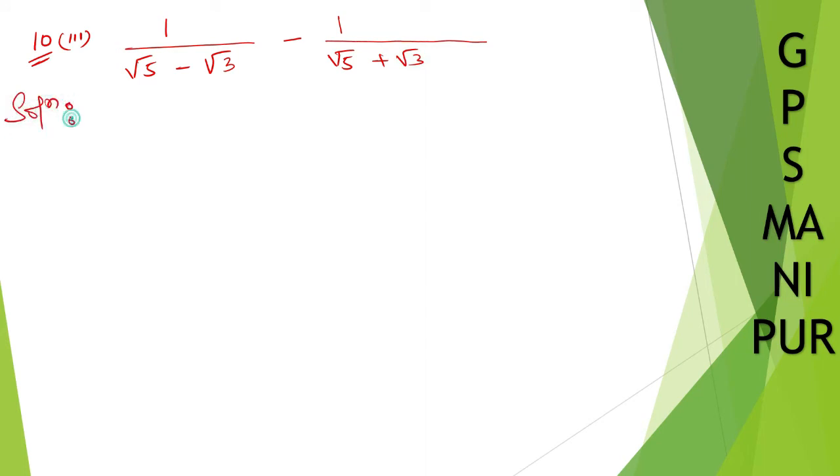Okay, solution. Now, how we can solve this? Like the previous type, same thing you are going to do. You can do like this, or let us do like this: take the LCM of these two. LCM will be root 5 minus root 3 into root 5 plus root 3. You are multiplying both numbers as LCM.